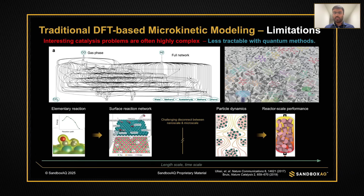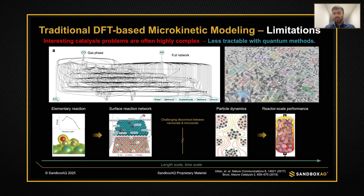Another degree of complexity comes from the complexity of the catalyst surface itself. Usually when we use DFT and quantum chemistry-based methods, we have to make a lot of assumptions on the structure of the catalyst. We only study simple catalyst facets, and this causes us to miss a lot of important catalyst dynamics that occur at larger length scales and time scales, which are very important for describing performance at reactor scales. These are two of the biggest challenges, and the reason why quantum chemistry on its own is not enough to solve the problem.